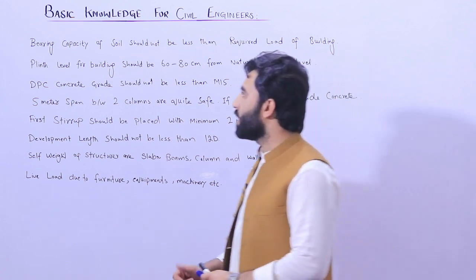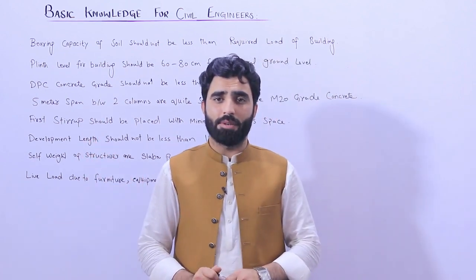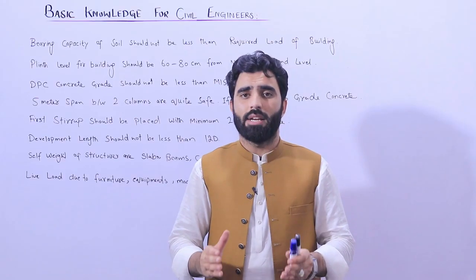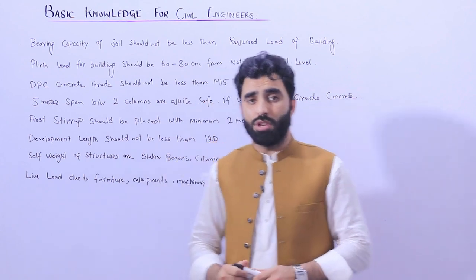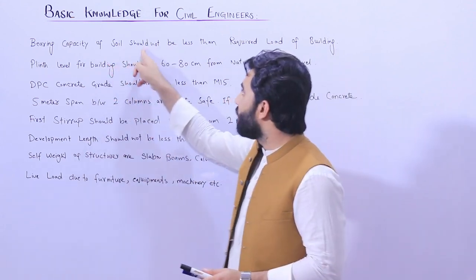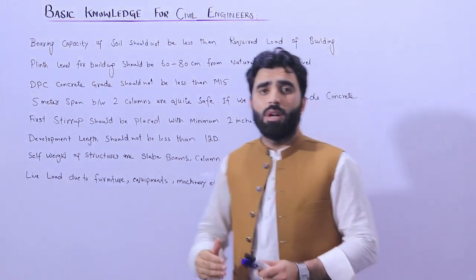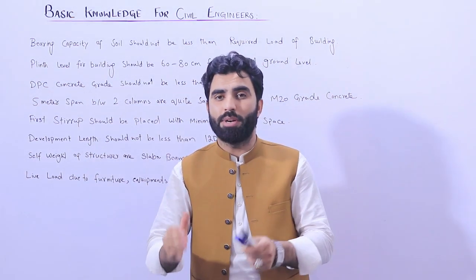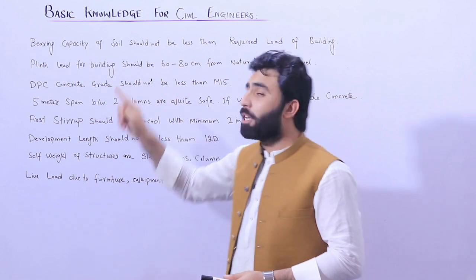The first topic is bearing capacity. Bearing capacity is the strength of soil. We have different types of soil, and different types of soil have different bearing capacities. The bearing capacity is the resistance which can resist the structure. So the bearing capacity of the soil should not be less than the required load of the building — for example, 5,000 kg per square meter or 10,000 kg per square meter.